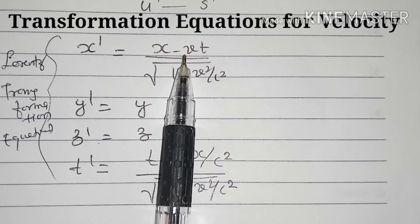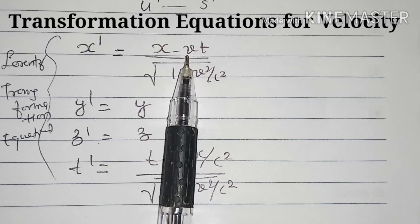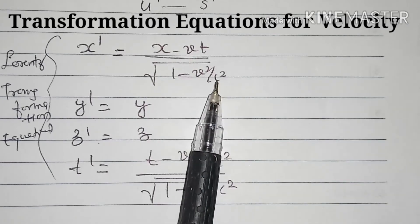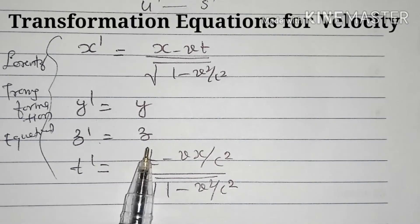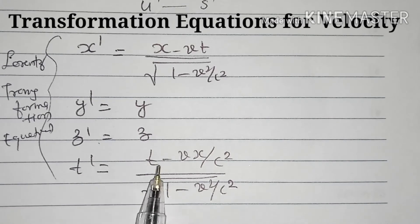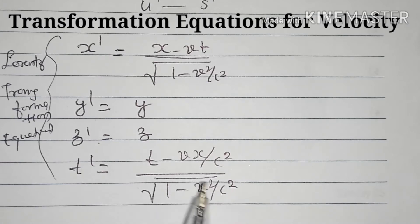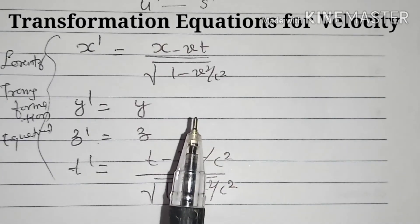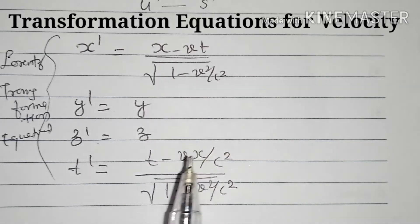Here V is the velocity of the moving frame S dash, and C is the velocity of light. Y dash is equal to Y, Z dash is equal to Z, and T dash is equal to T minus V X by C squared, divided by the square root of 1 minus V squared by C squared, where X is the position coordinate in the X direction in the S frame.